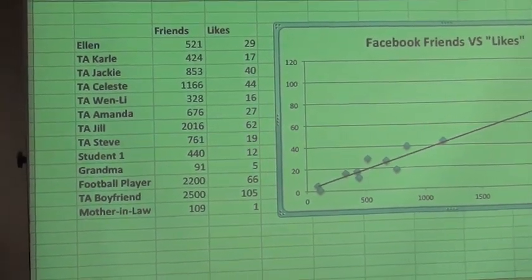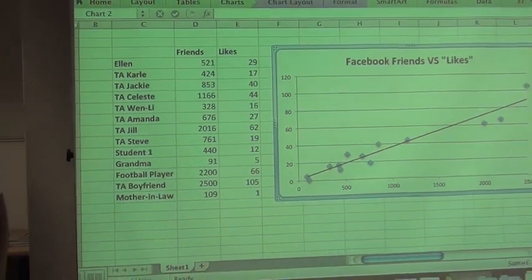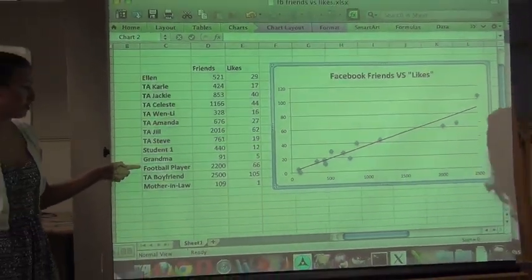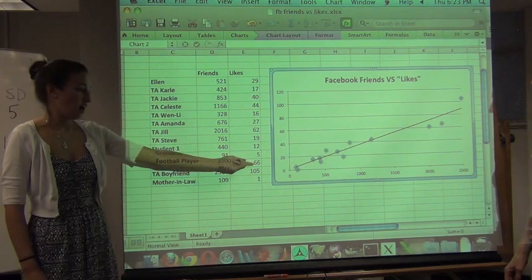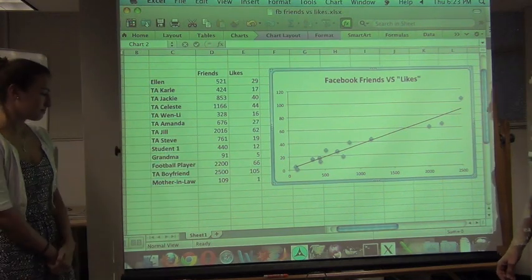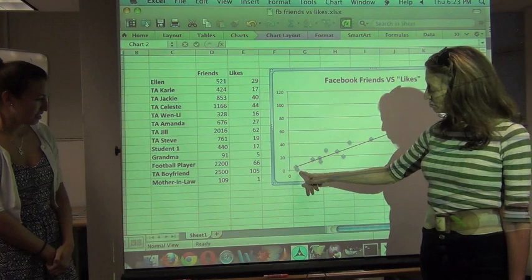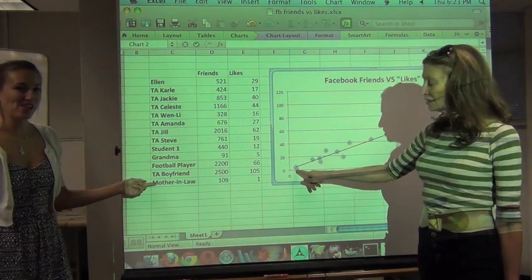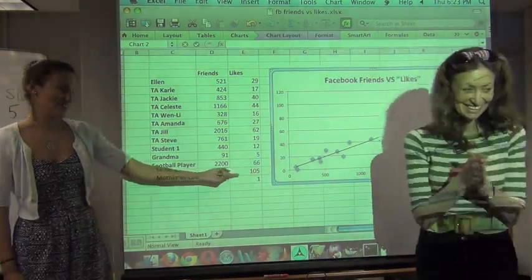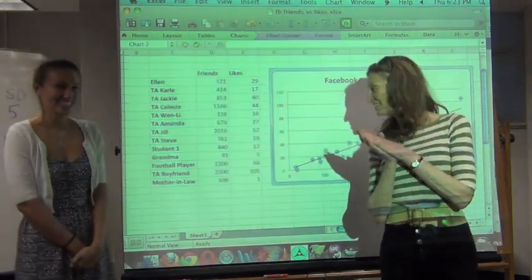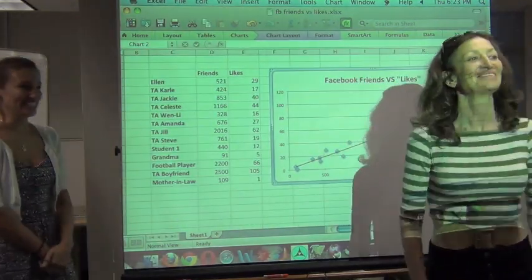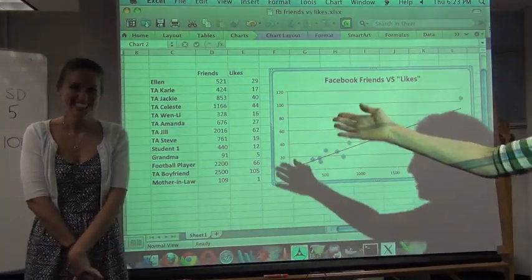Who is this? That is the football player. The football player had a ton of friends and then also had a lot of likes. And this poor person - that's the mother-in-law. They only had one like. Oh, okay. Who's mother-in-law? Jackie's actually. Okay. Well, go ahead.